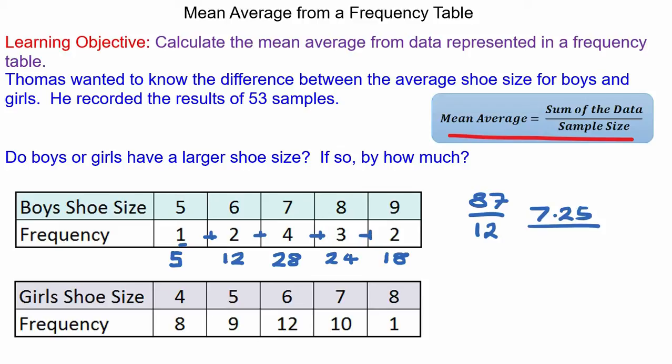To work out the average shoe size of a girl's. Eight girls have a shoe size of four so in total that would be a shoe size of thirty-two. Nine girls have a shoe size of five so that would be forty-five.